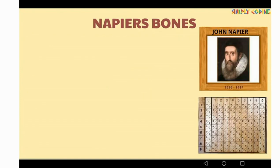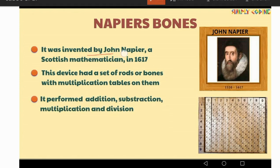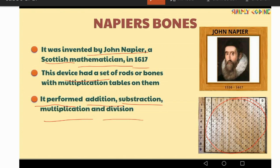The second device is Napier's Bones. It was invented by John Napier, a Scottish mathematician, in 1617. This device had a set of rods or bones with multiplication tables on them. As you can see, there are numbers on it which were used to perform calculations. It could perform addition, subtraction, multiplication, and division.